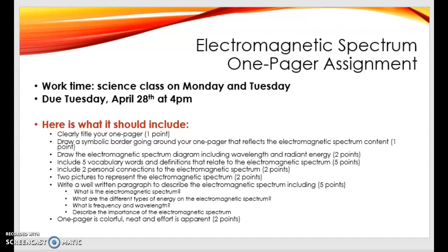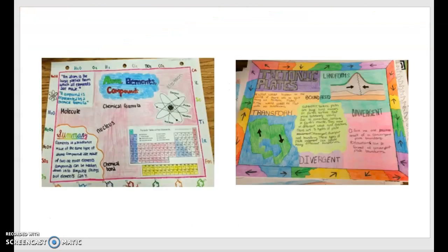This assignment is like a graphic representation of what you've been learning. Here are some examples of what I mean by that. You can see here that they include pictures, titles, and information about the topic. This one is about atoms, elements and compounds on the left, and on the right this one is about tectonic plates. I just wanted to give you a couple of visuals about what your work should look like.